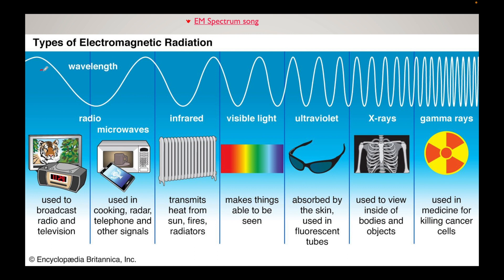Wavelength is greatest on the radio waves side. So we have a big wavelength, which means you will notice that the frequency is less — there's like one wave here versus a lot of waves on the other side. Remember, frequency is the number of waves. So on the left-hand side, we have a small frequency.